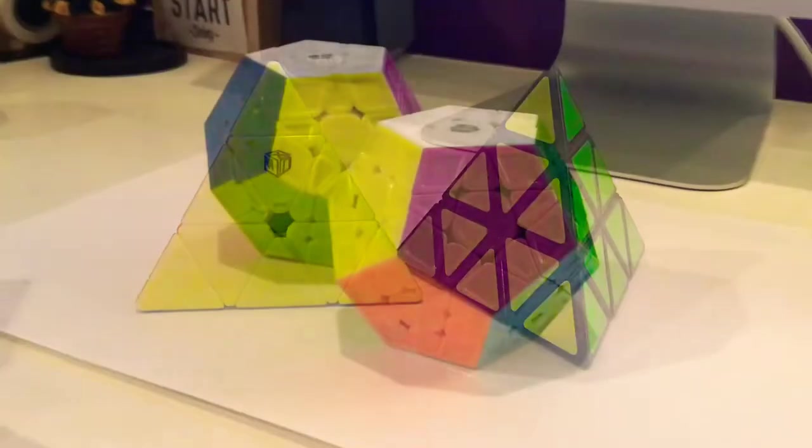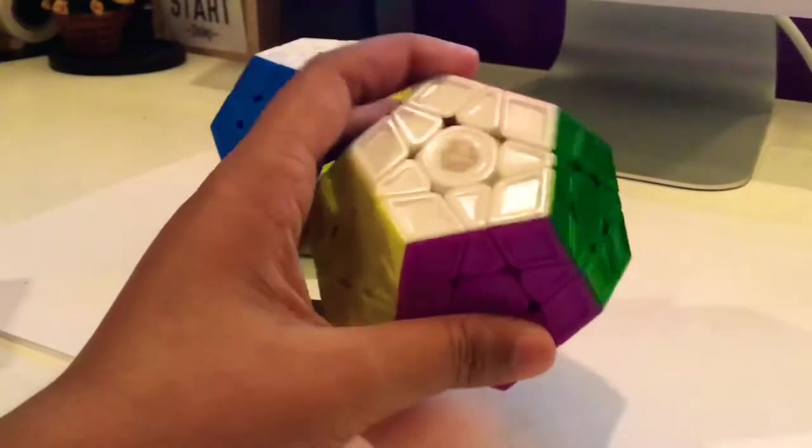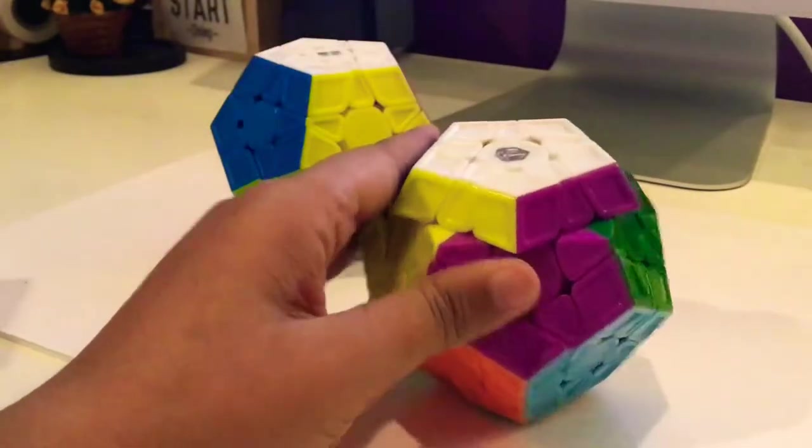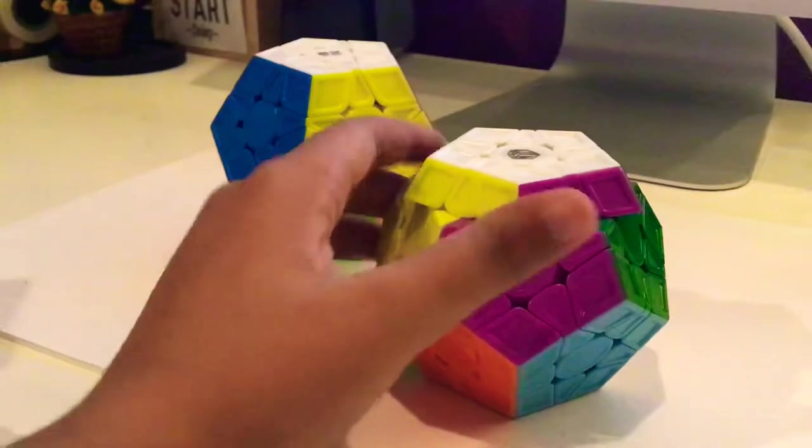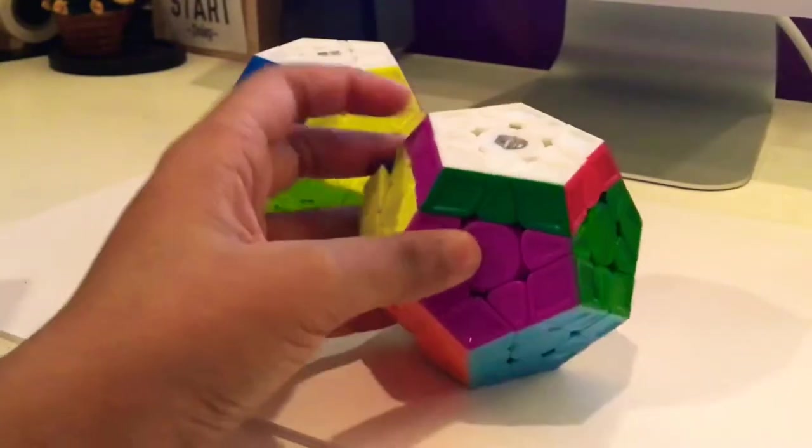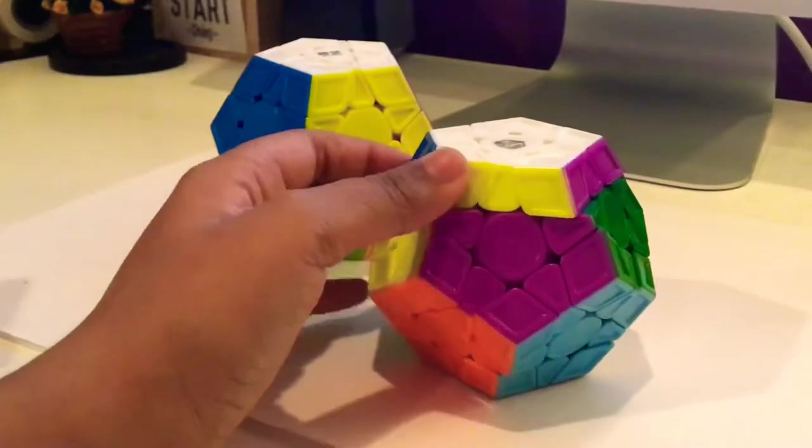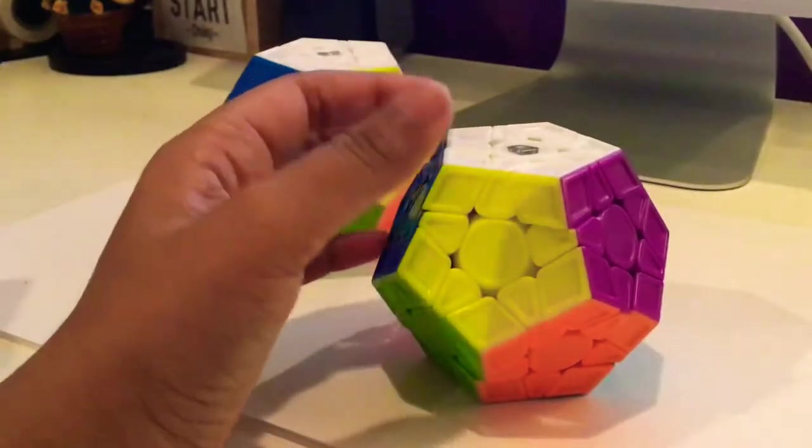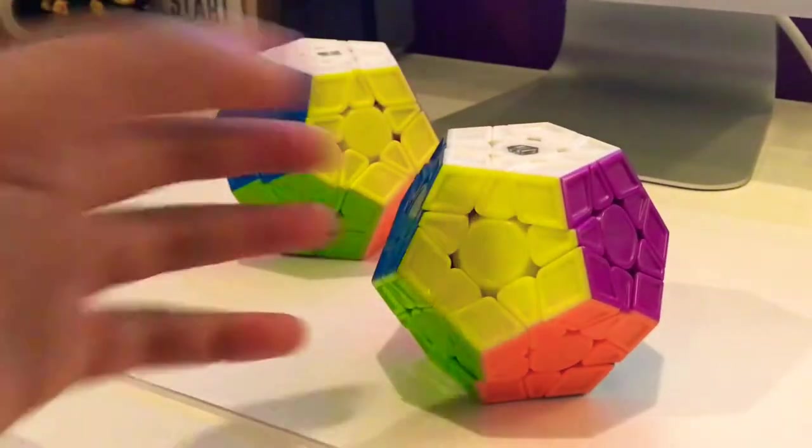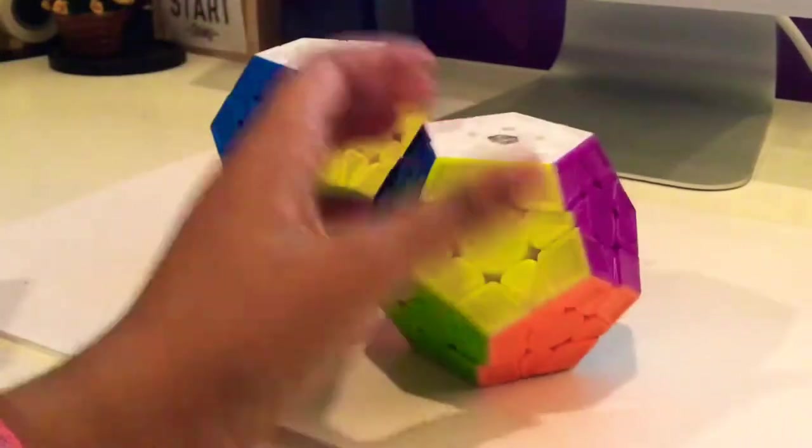For megaminxes, I have two megaminxes. This is the X-Man Galaxy V2 M and I actually won this from Cube Solve Hero's giveaway. I got this megaminx and the turning is really nice, but I kind of regret getting the magnetic version because the magnetic version is just like you can't really get high TPS on it. So I kind of wish I got the non-magnetic version of this cube, but that's okay.